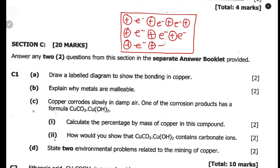To present it, you draw the positive ions and the delocalized electrons surrounding them. The forces of attraction between the positive metallic ions and the delocalized electrons is what we call metallic bonding.